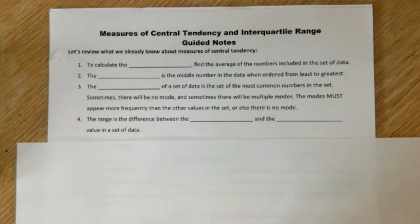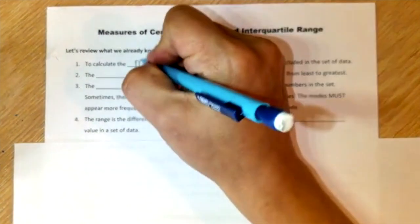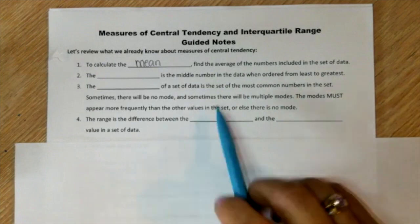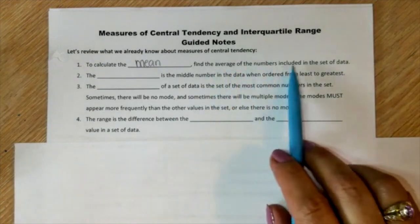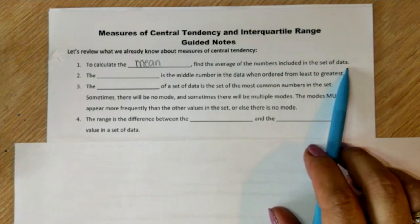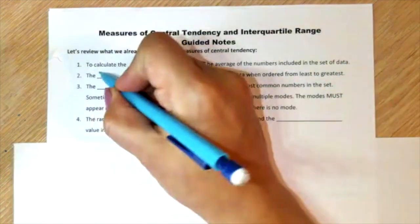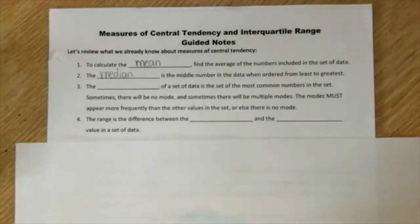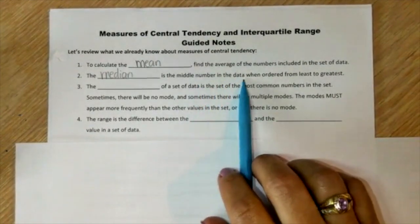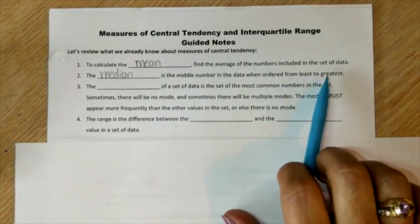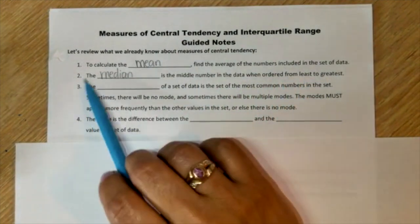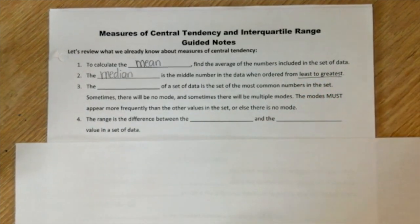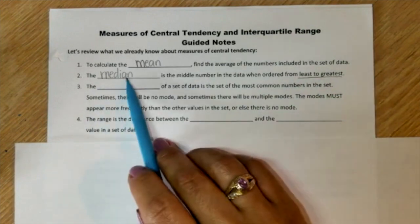To calculate the mean, you're going to have to find the average of the numbers included in the set of data. The median is the middle number in the data when ordered from least to greatest. You have to remember that for the median, you first have to order from least to greatest before you try and find the median.